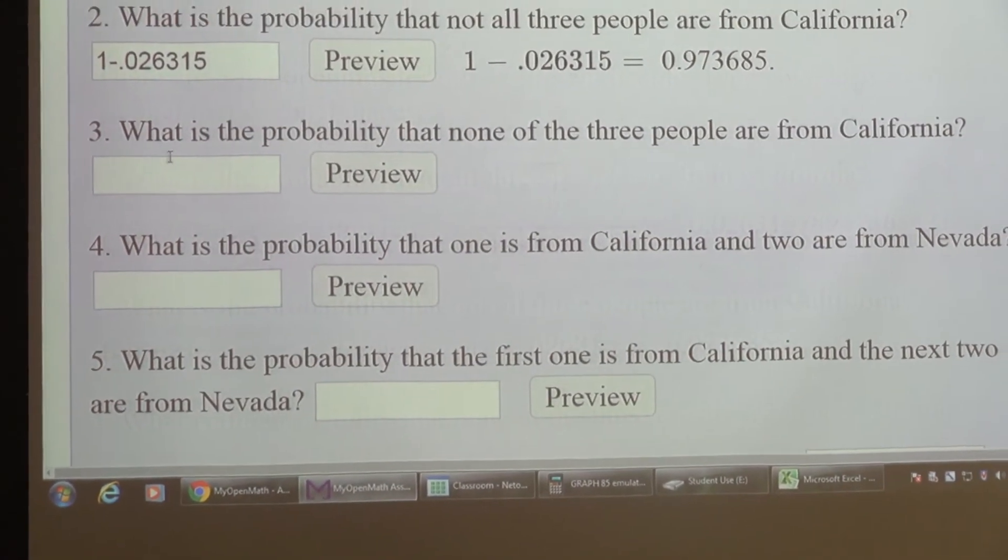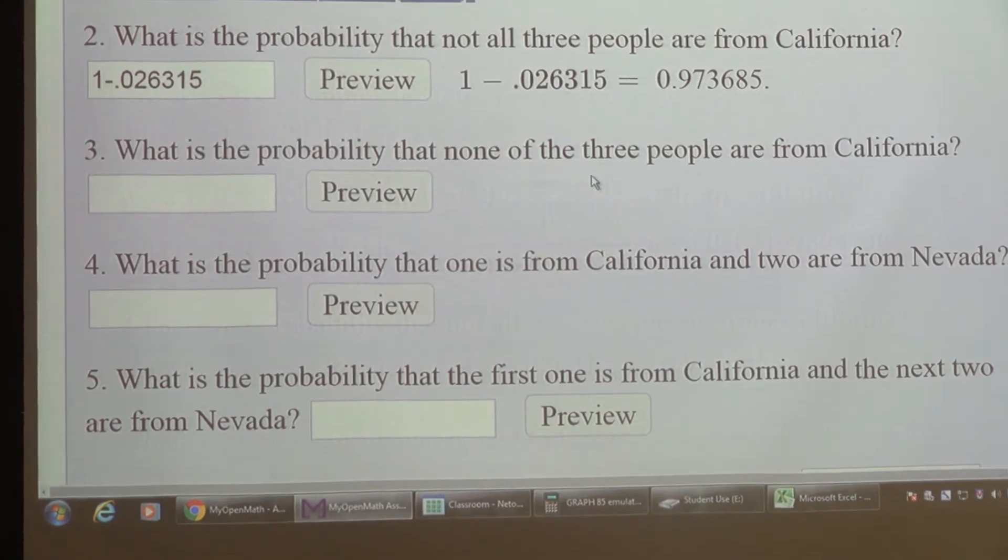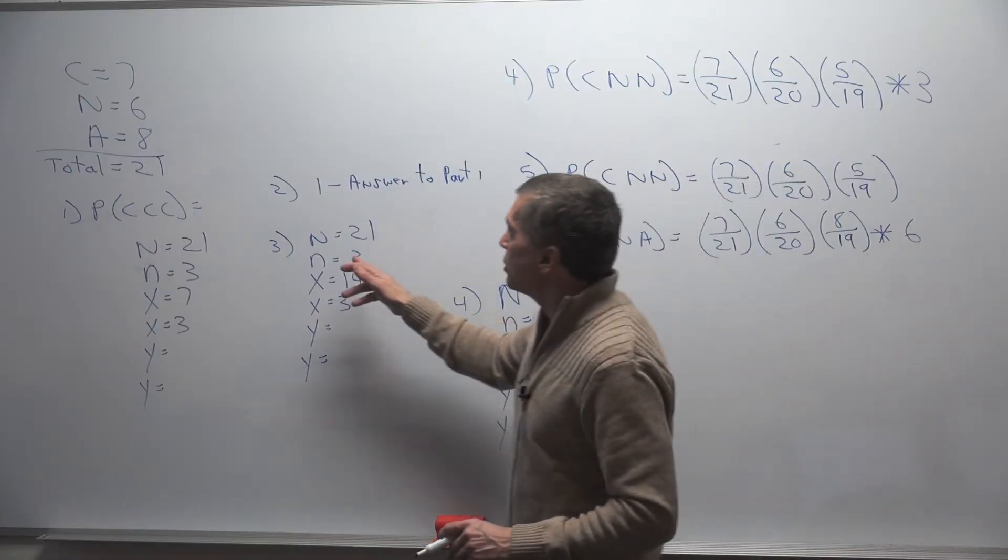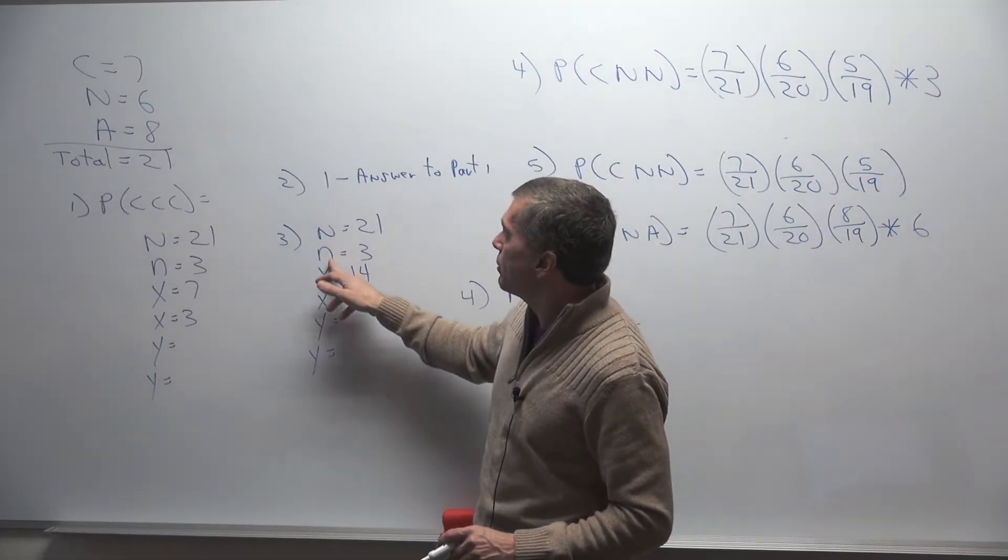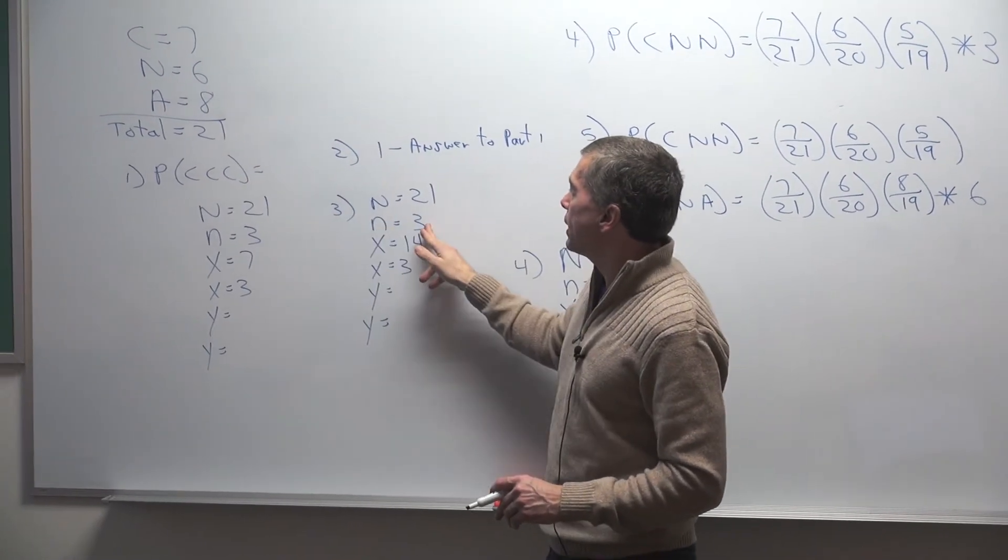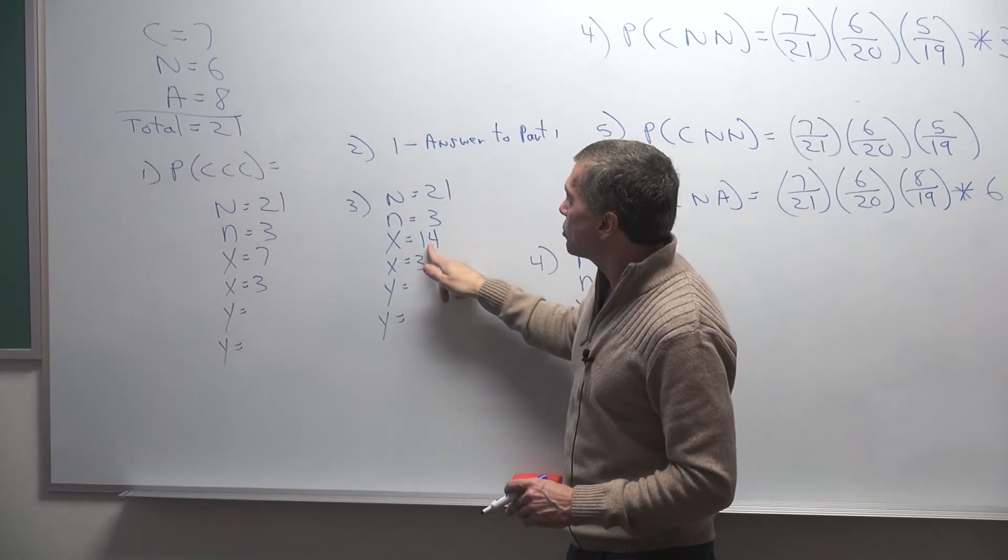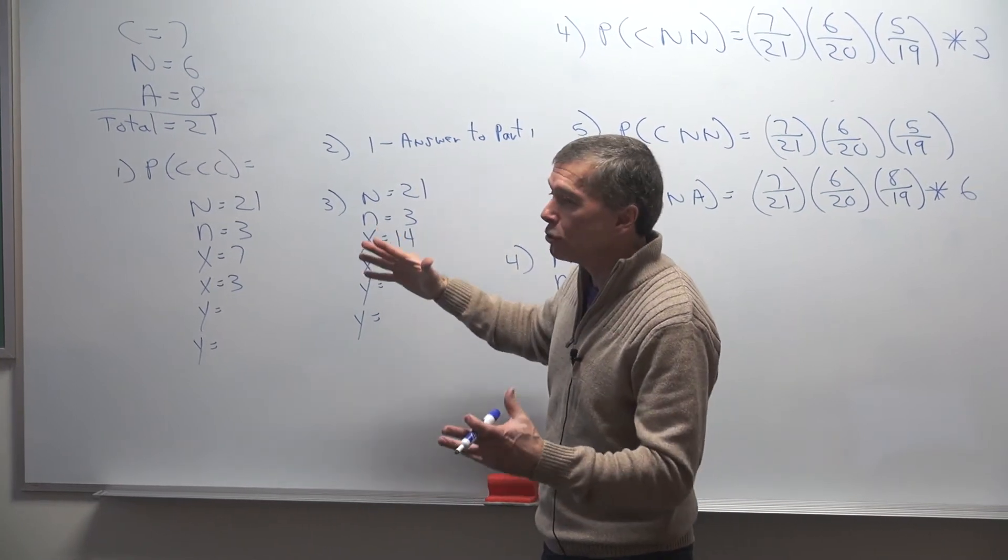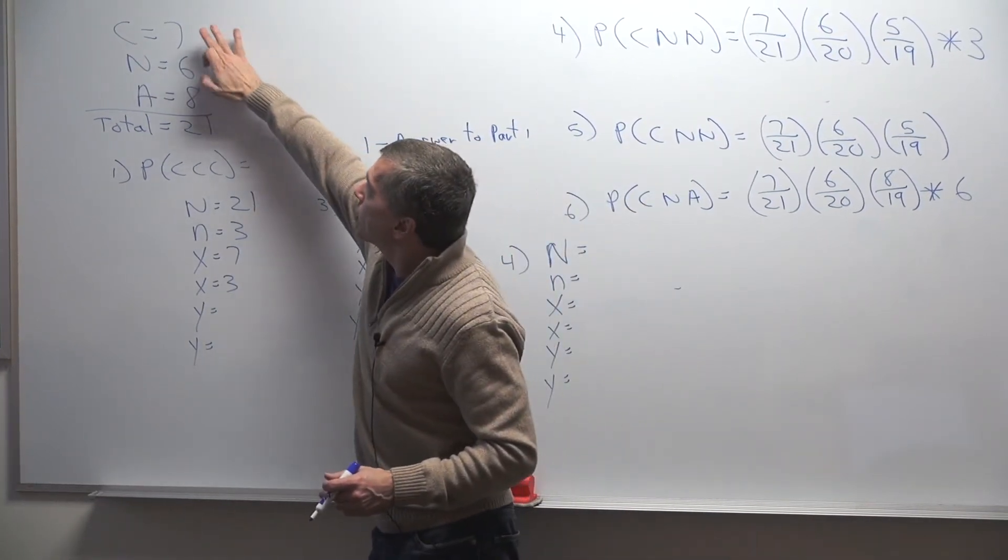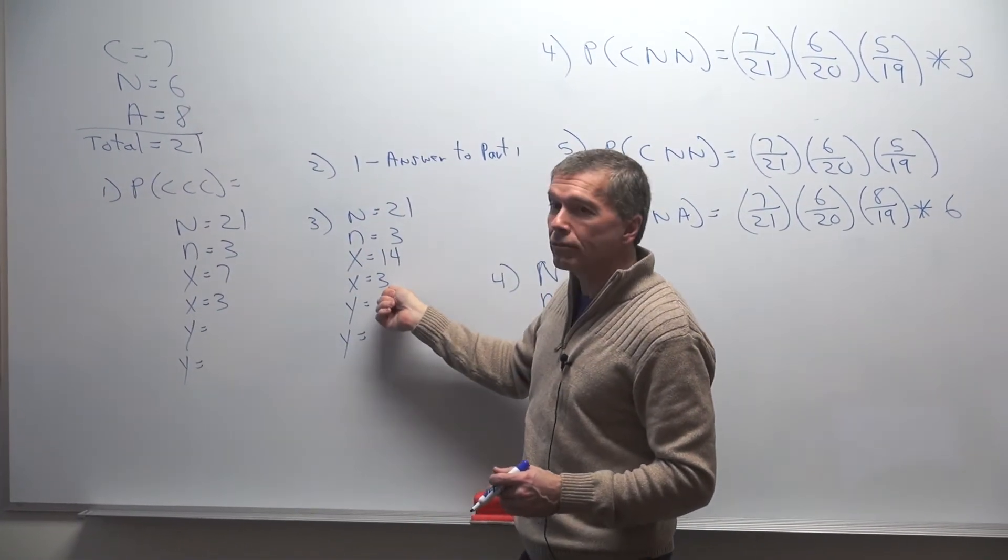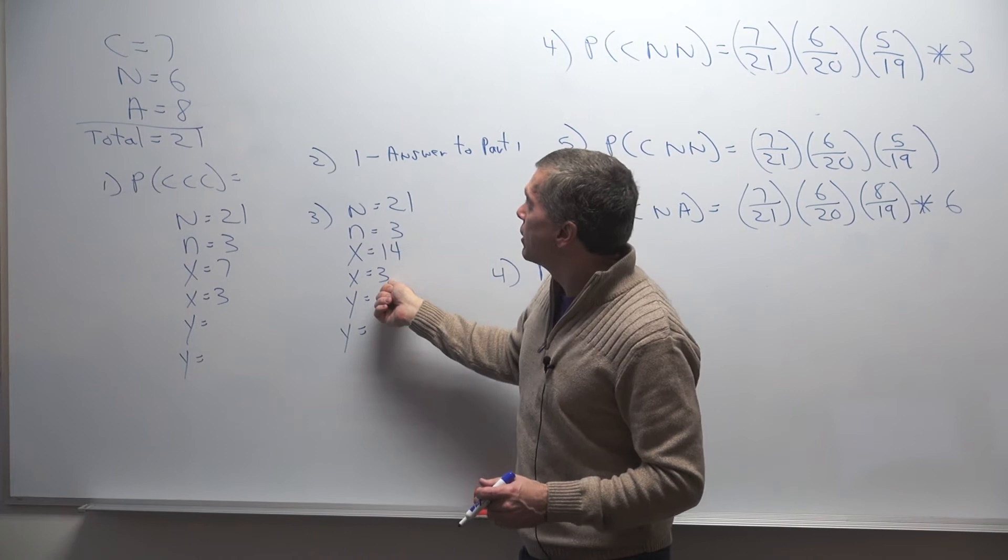On three it says, what is the probability that none of the people are from California? So none of the people are from California. These are going to remain the same. Here's my population size, 21. Here's how many people I'm sampling out, three. This X right here is the number of people in the population that I have to choose from, 14 total, because seven are from California.